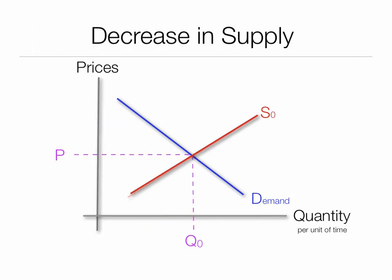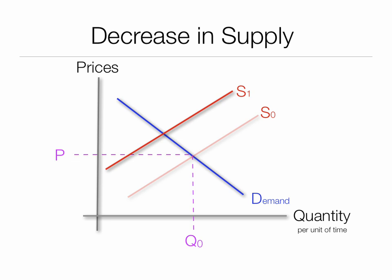A decrease in supply moves the curve to the left. Notice something else too: at the same price, if we hold price fixed and we just look at these supply curves, at the same price, less quantity is supplied as well.